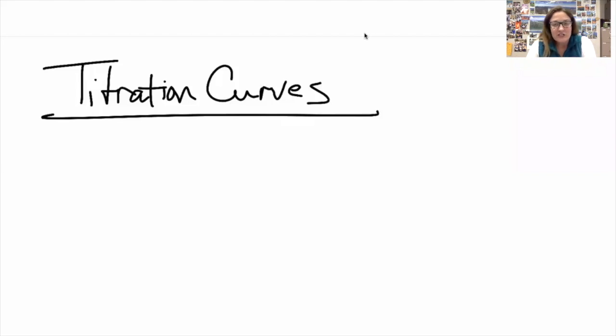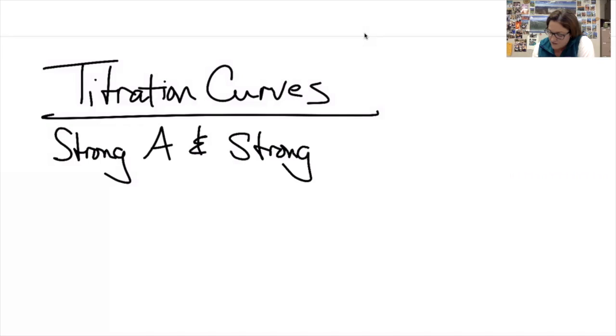There are a few different kinds of titration curves that you need to worry about. The first one is the most simple, and that's between a strong acid and a strong base. So you can think of these examples as HCl and NaOH.